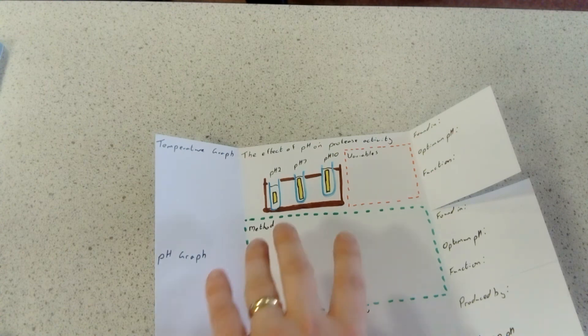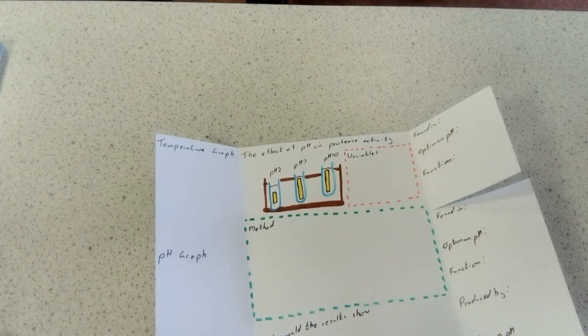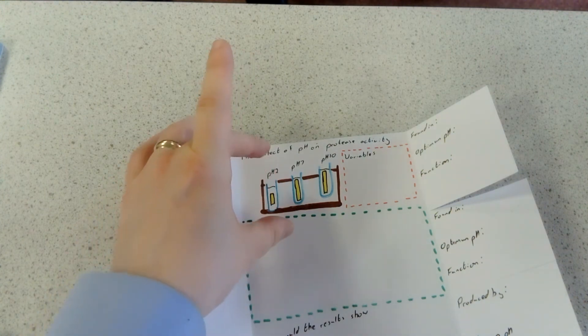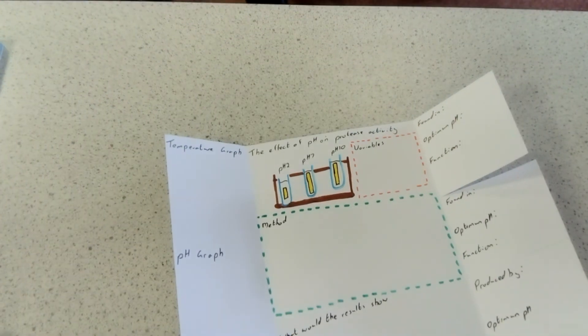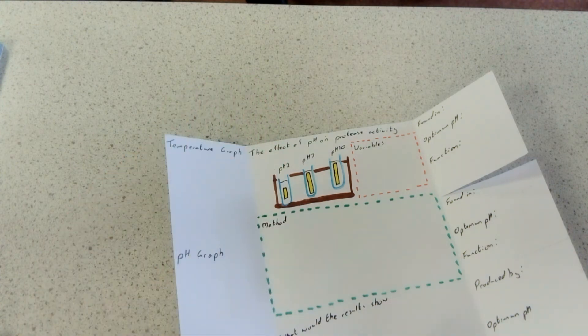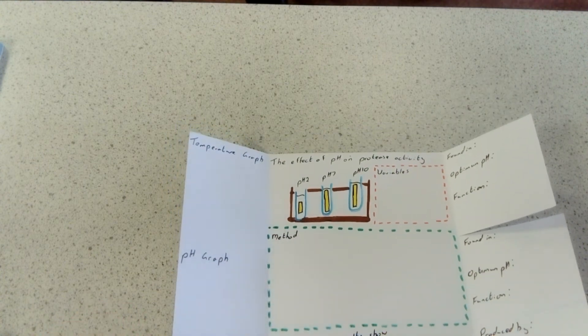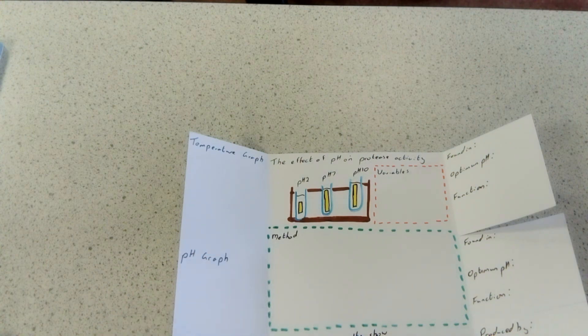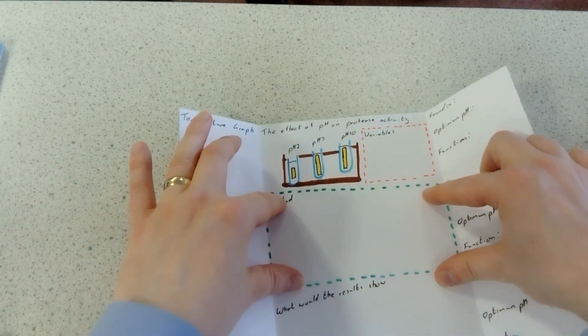Think about the variables. We're going to be adding protease to it. Our independent variable—what we're changing—will be the pH. Our dependent variable—what we're measuring—is the length of the egg piece or amount of protein. The less protein at the end, the better your protease has worked. Control variables are things you need to keep the same: type of enzyme, volume of enzyme used, volume of liquid, temperature, things like that. Write yourself a basic method.